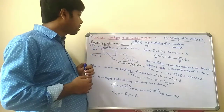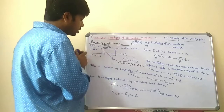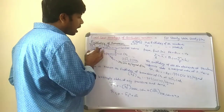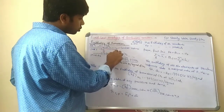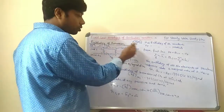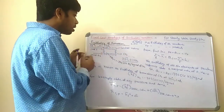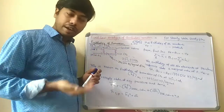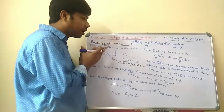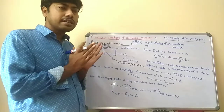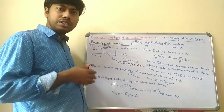Now we'll discuss enthalpy of formation. For the first analysis of combustion reactions, consider a steady state combustion chamber. In this combustion chamber, the reactants — carbon and oxygen — enter. We assume this is the control volume, indicated by the dotted line outside the combustion chamber. The product exiting the combustion chamber is CO2, and this reaction occurs at a temperature of 25°C and pressure of 0.1 MPa, which is the standard reference state. We assume steady state, steady flow devices with no work transfer, no kinetic energy changes, and no potential energy changes.